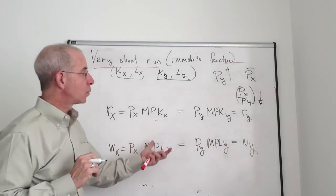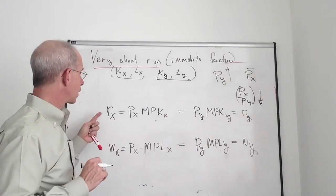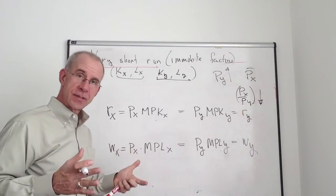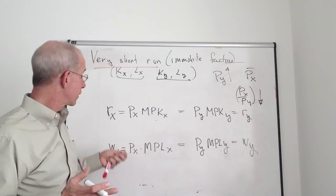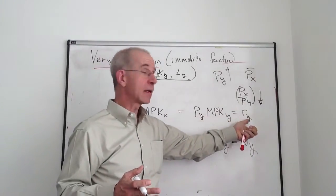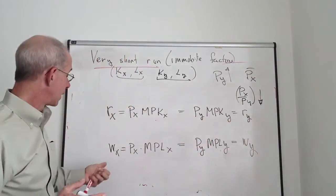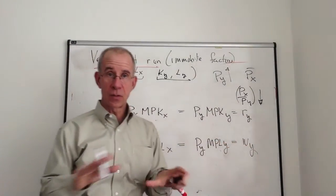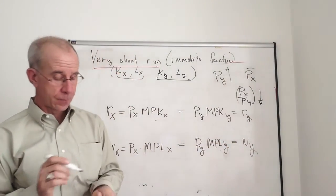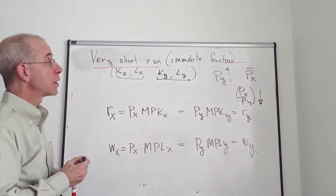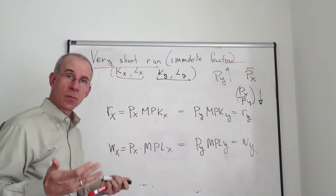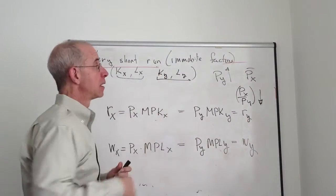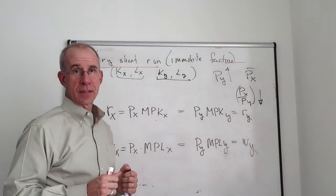We're starting with a situation where labor and capital have no incentive to move back and forth. Capital earns the same in X and Y. Labor earns the same in X as in Y. So you start out with this equilibrium and we're going to allow the price of Y to rise, keeping the price of X the same.